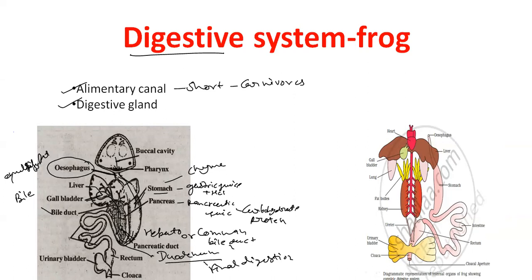Then the food enters to the rest of the part of the intestine where absorption takes place. For absorption, intestine have finger-like projection called villi and microvilli. So absorption takes place in intestine. Then undigested food enters into the rectum, from rectum to cloaca, and through cloaca aperture it excretes out from the body.